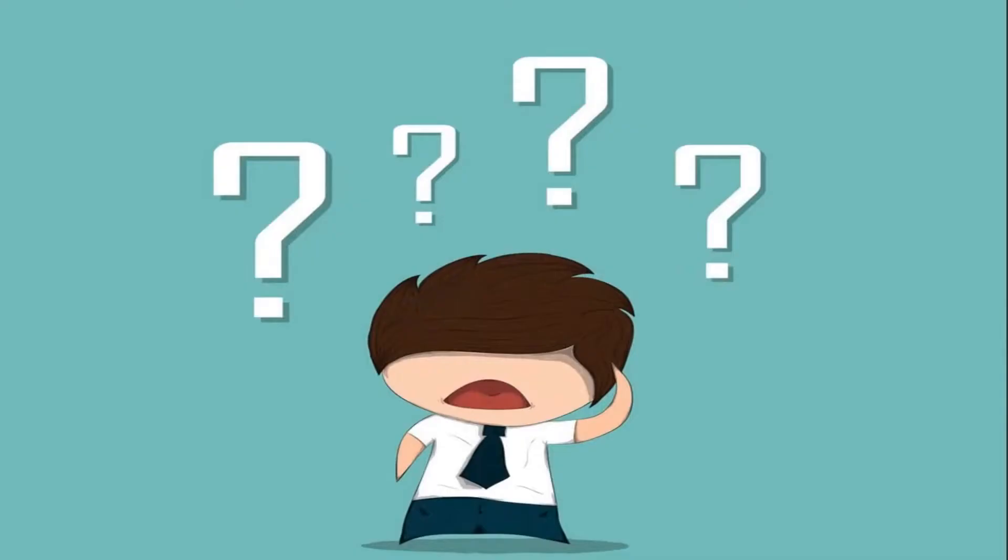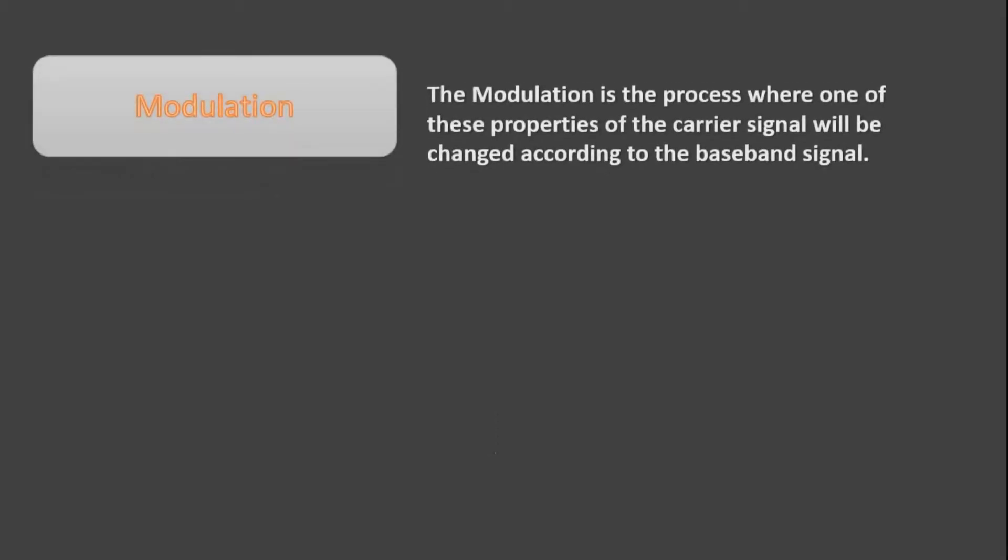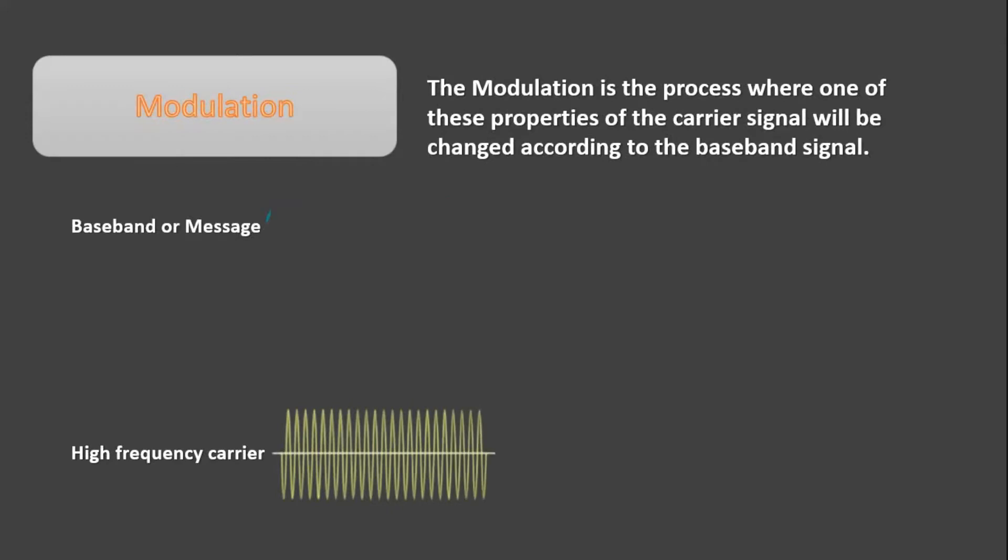Now the question is, how to impose this message signal into the carrier signal? We know that any signal has three basic properties: amplitude, frequency, and phase. So the modulation is the process where one of these properties like amplitude, frequency, or phase of carrier signal changes according to the message signal.